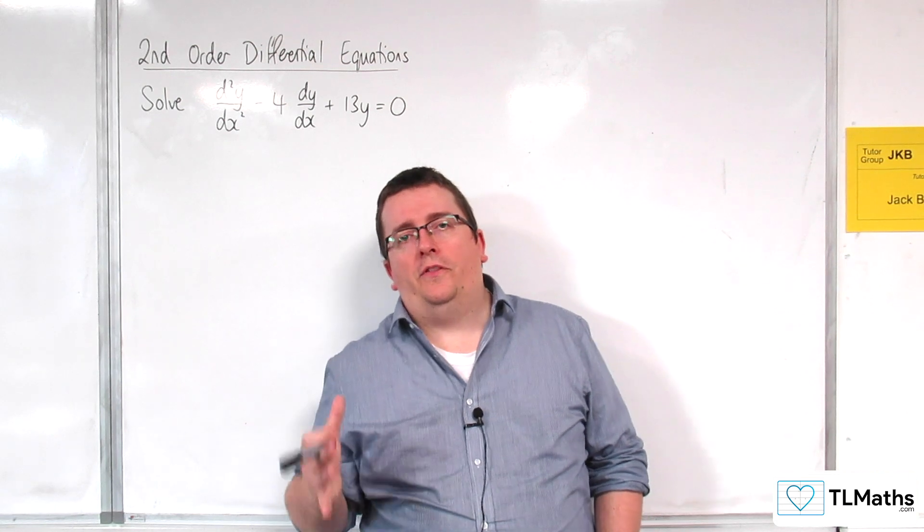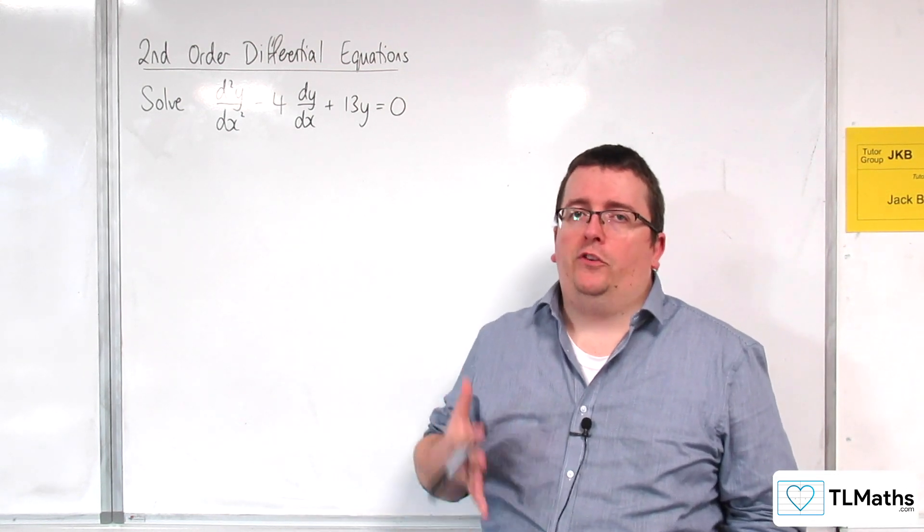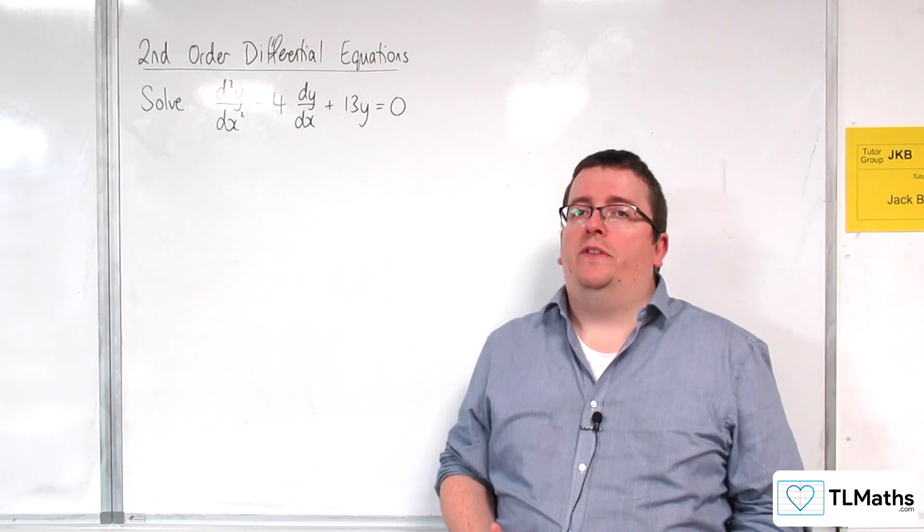So now we're going to have to answer the question, what if the auxiliary equation gives us complex roots? How are we going to deal with that?